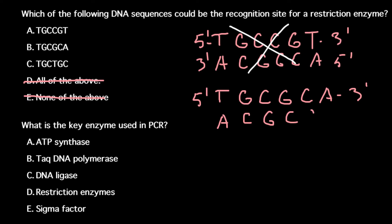This is the 5 prime end and this is the 3 prime end. Let's read: here we have T-G-C and here we have T-G-C-C-G-C-A. This can serve as a recognition site for restriction enzyme.